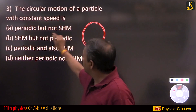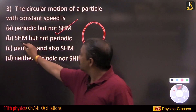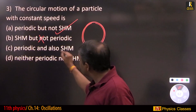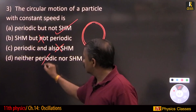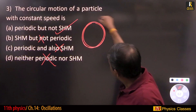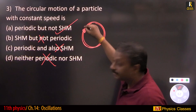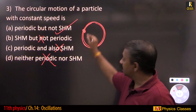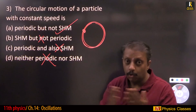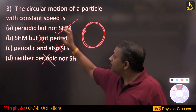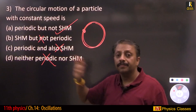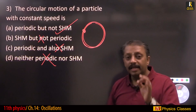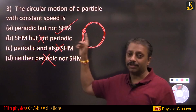Circular motion of a particle with constant speed is periodic but not simple harmonic. It is periodic — it repeats and visits the same place after regular intervals of time — but it is not simple harmonic, meaning it is not to-and-fro motion. If you do not analyze the options properly, you will be in trouble. Make sure you take a little extra time for conceptual questions.